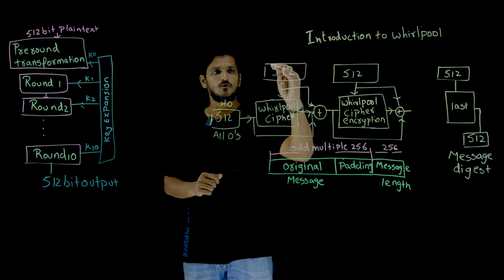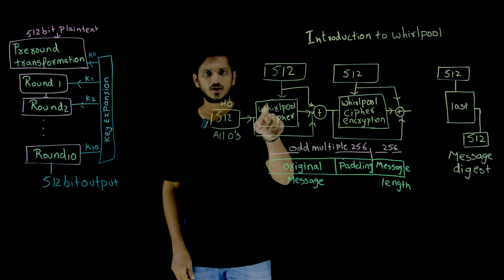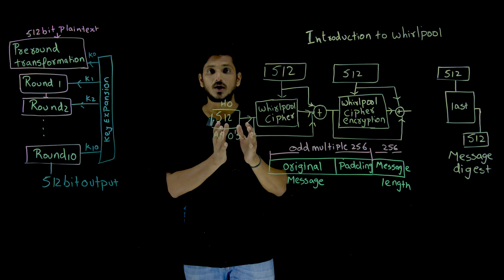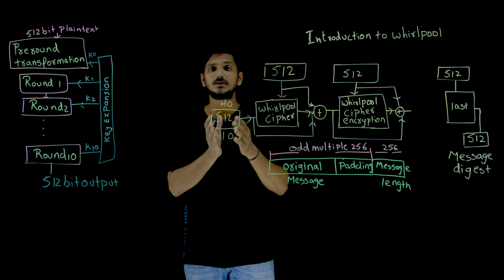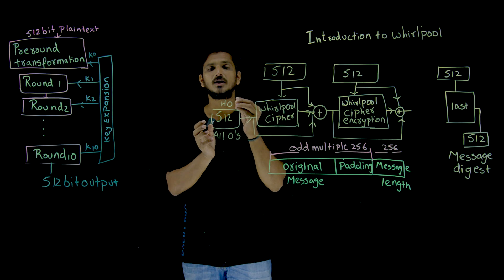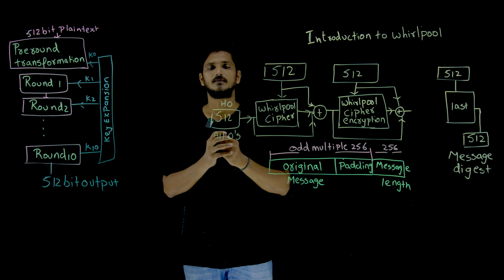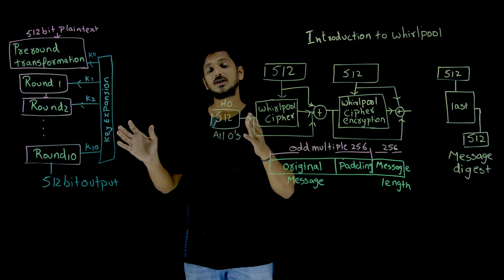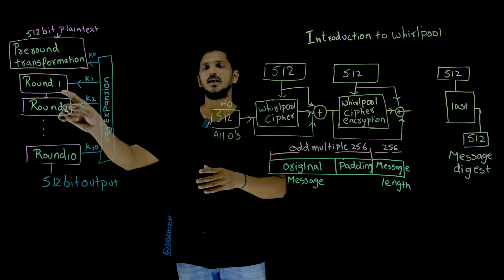Once each 512-bit block is given as input to the Whirlpool cipher block, what happens inside this block will be discussed in our next class. We are going to continue with what happens inside each round.